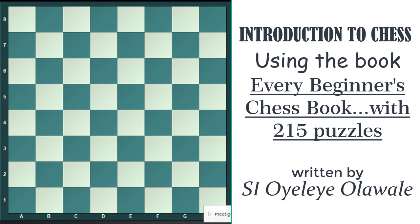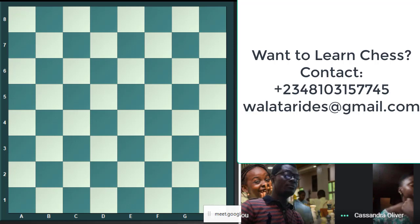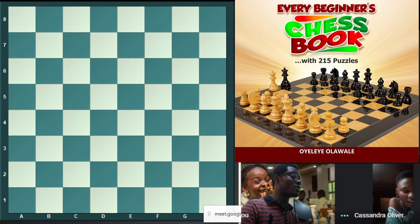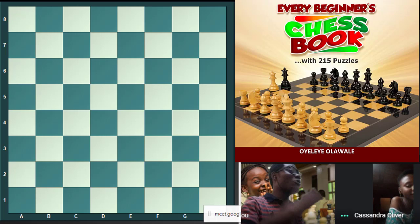Hey, good evening Cassandra. We are going to be having a chess class. We'll be dealing with the introduction to chess from the beginning to the point where I can make you an intermediate player. We're gonna start with the chessboard. What can you see on this chessboard? I believe you've read the beginner's chess textbook, so let's start drilling.